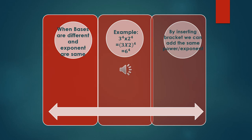This is the second law of exponent. In this example, in the large font we can see here bases are different but exponent or power is same. Now we insert the bracket and the bases are multiplied in the bracket. 3 into 2 becomes 6 and we get the power same which is 4.